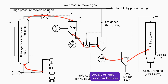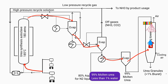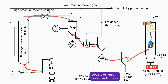Molten urea is sprayed from the top section of the tower. As the molten urea descends, surface tension causes it to form round droplets. Simultaneously, cooling air is circulated inside the tower from the bottom section. When the molten urea comes into contact with the cooling air, the water present in the urea is removed and the temperature decreases. As a result, the round droplets solidify into granular urea, and finally the granular urea exits the tower, which contains less than 1% biuret. Biuret is not a component of urea itself, but rather a substance that can be formed as a byproduct during the synthesis of urea.